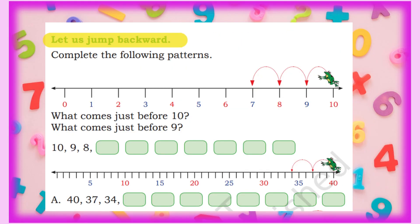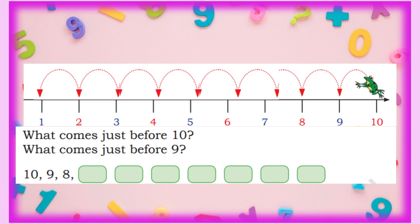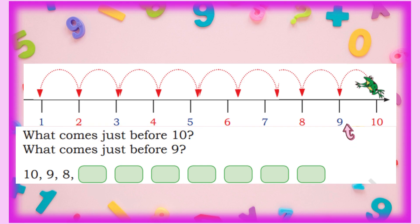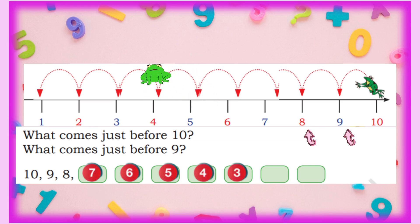Now the next part: Let Us Jump Backward. We have to complete backward counting patterns on a number line. Backward means going in the reverse direction. Here a frog is jumping backward. What comes just before 10? Nine. What comes just before 9? Eight. So the frog jumps: 7, 6, 5, 4, 3, 2, and 1. We fill these boxes in this way.